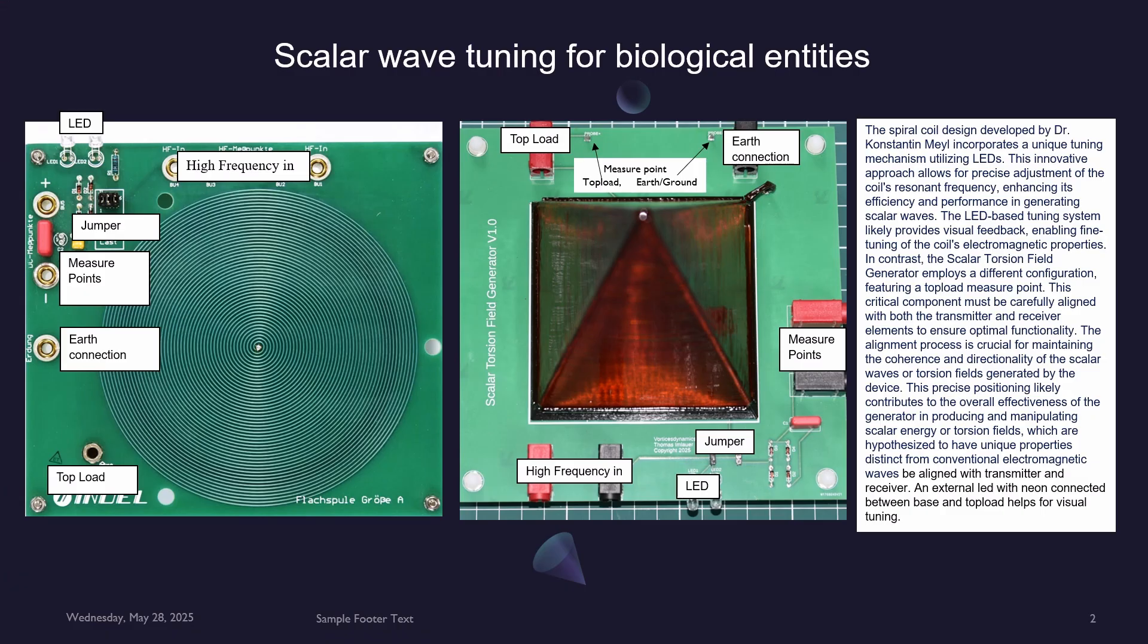This precise positioning likely contributes to the overall effectiveness of the generator in producing and manipulating scalar energy or torsion fields, which are hypothesized to have unique properties distinct from conventional electromagnetic waves. An external LED with neon connected between base and top load helps for visual tuning.